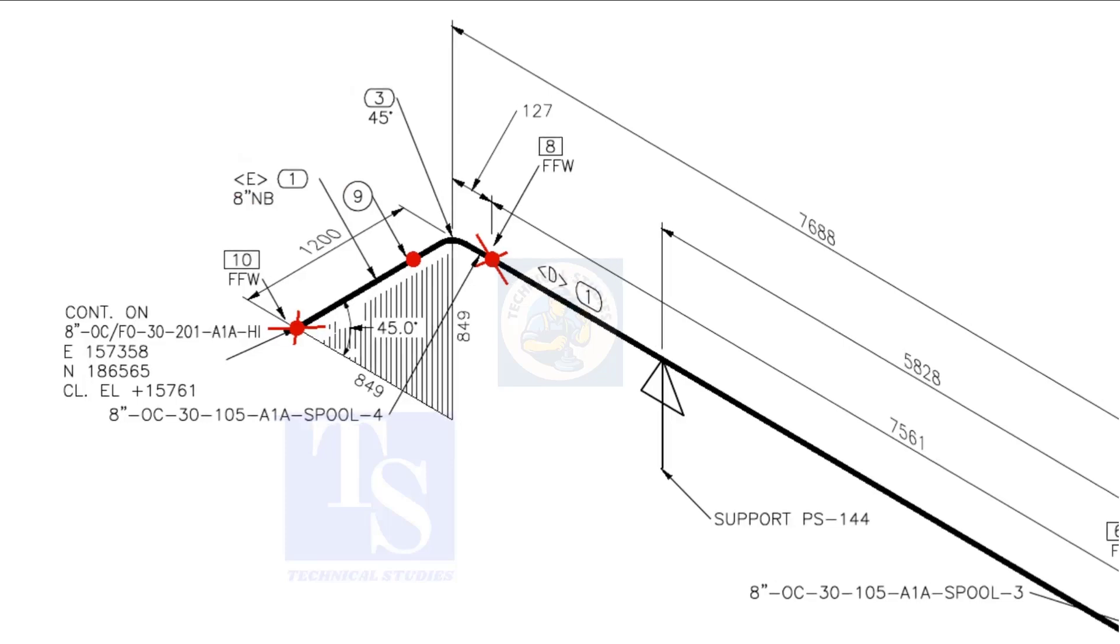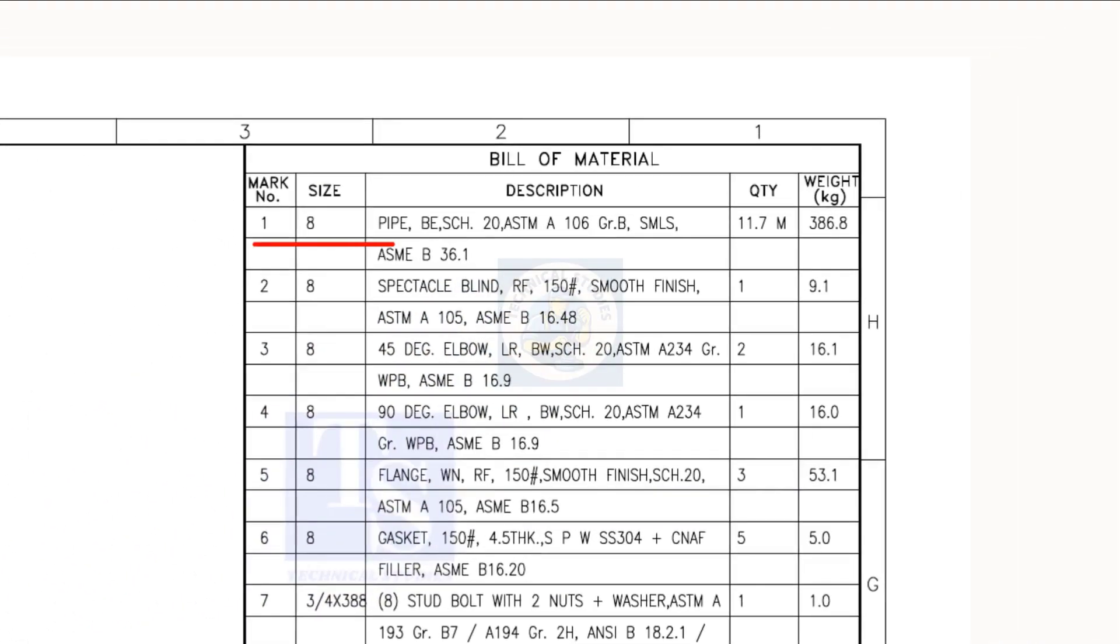Let us confirm in the material list. As per the list, item number 1 is 8-inch bevel end schedule 20 seamless pipe. Item number 3 is 45-degree long radius butt weld schedule 20 elbow.